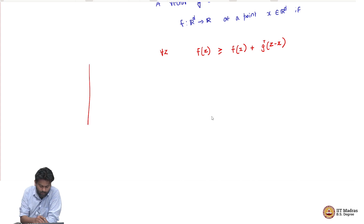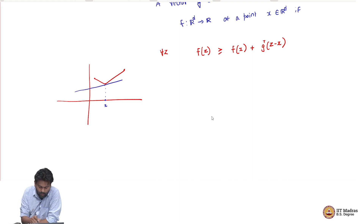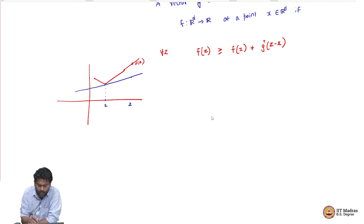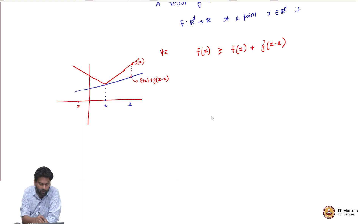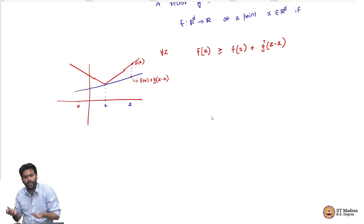Going back to the example: we have a piecewise function that is not differentiable at some point x. For any z I pick, the function takes value f(z). If the slope is g, then the linear approximation gives f(x) plus g times (z minus x). You can see that f(z) is always above this linearization. If you can find such a g satisfying this for all z, then that is a sub-gradient.